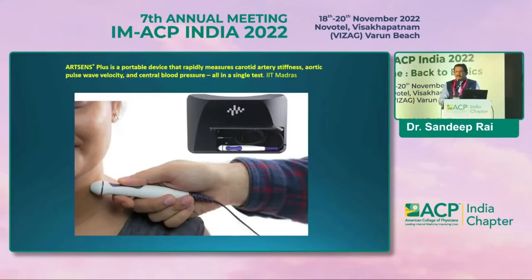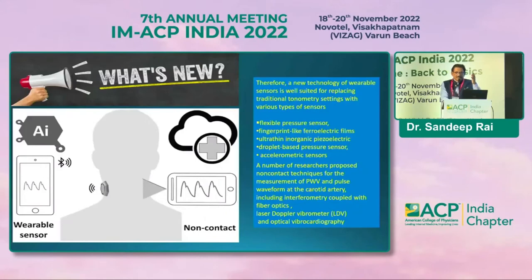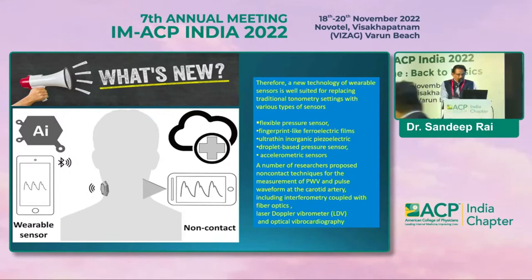These risk profilers are available in the market — you can find validated instruments at conferences and use them in your clinic. They are becoming more sophisticated. IIT Madras has made one where you simply put a probe on the carotid and obtain central aortic pressure, augmentation index, and augmentation pressure. Artificial intelligence with flexible pressure sensors, fingerprint-like ferroelectric films, and other technologies allow you to find central aortic pressure non-invasively. Researchers have also proposed non-contact techniques including laser Doppler vibrometry and optical vibrocardiography.